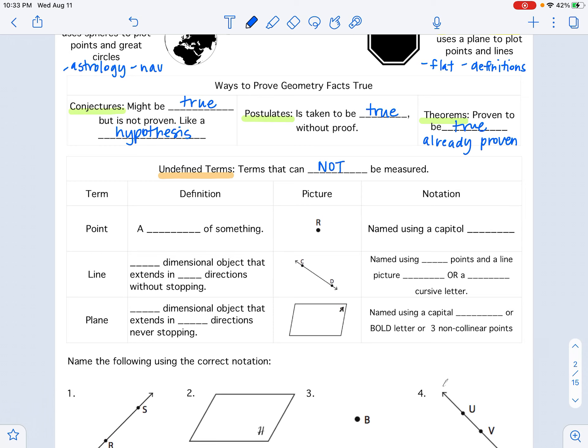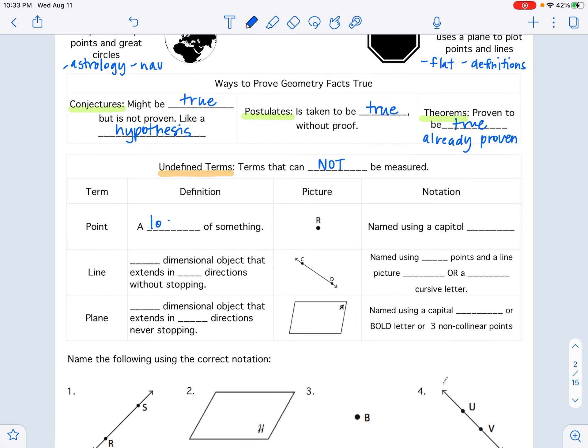A point is the location of something. Next to it, we have what it would look like. So here's a picture of a point. And notation is how we name it. We name it using a capital letter.